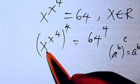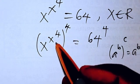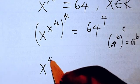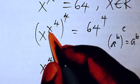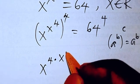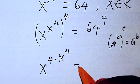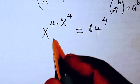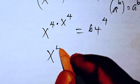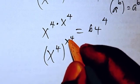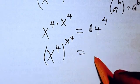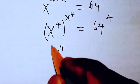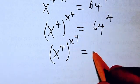x^4 is a power, and 4 is also a power. We multiply these, so we have x^(4x^4) = 64^4. From there, we can rewrite this equation as (x^4)^(x^4) = 64^4. So we have x^4 raised to x^4.